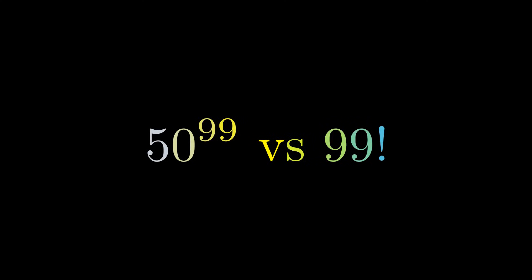Here's a fascinating question: which is bigger, 50 to the 99th power or 99 factorial? Both are astronomically large numbers, so a direct calculation is completely out of the question. The real question is how can we possibly compare them?